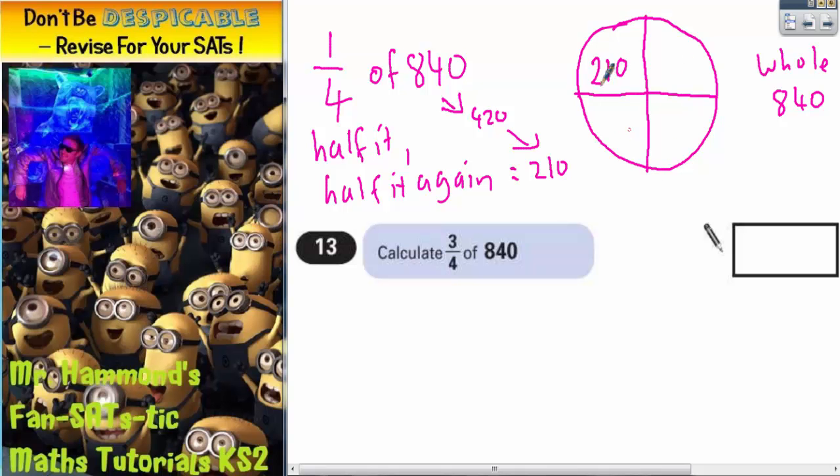Remember, quarters are all the same size, so they're all worth 210. I could write it on this last one here, but I'm not going to because I'm only interested in three quarters.